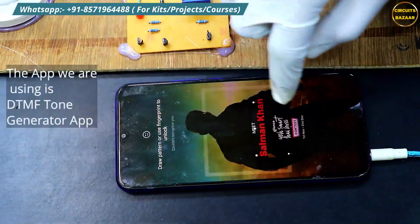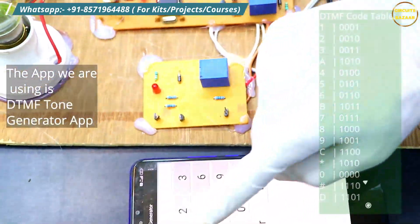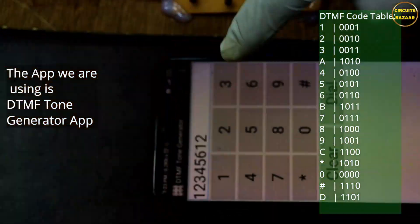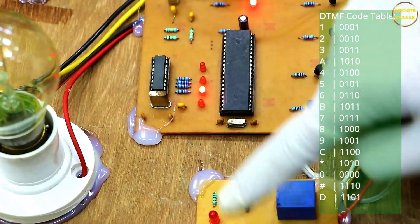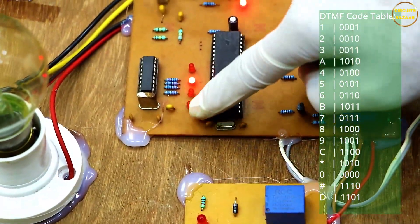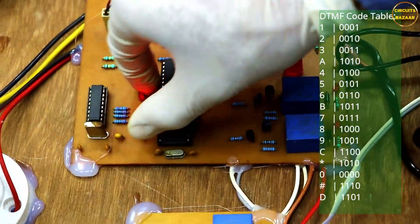If you press 1, then you can see 0001 data. If you press 2, data will be 0010. If you press 3, data would be 0011. If you press 4, data would be 0100. So basically this is 4 bit data coming out of this IC HT9170 or MT8870.